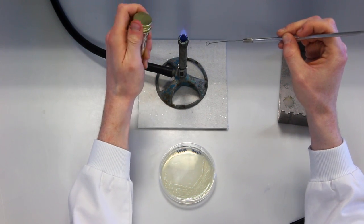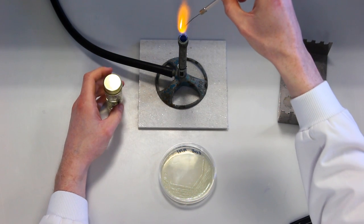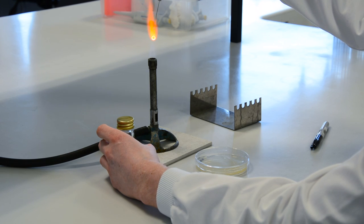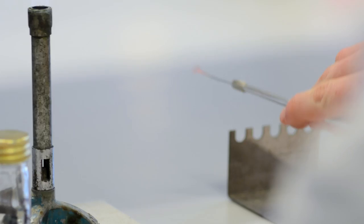The bottle neck is then flamed once more and the lid is replaced. Finally, the loop is sterilised so it is safe to leave on the bench.